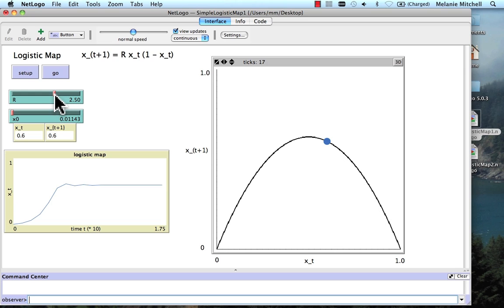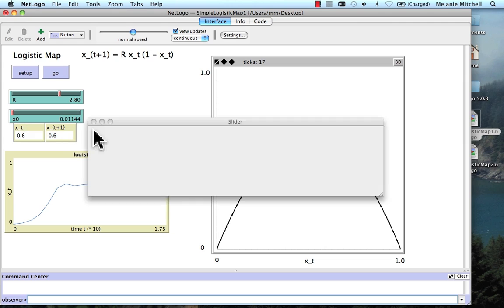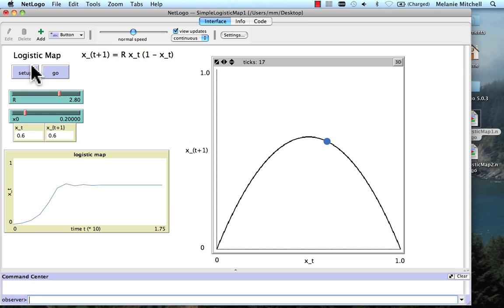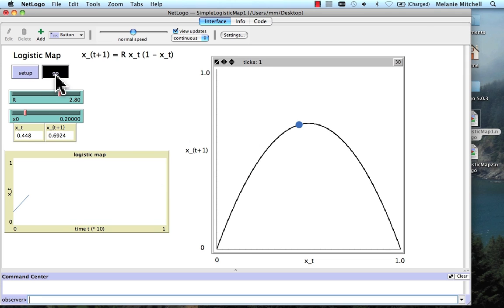Let's try this another time. Let's set this r to 2.8. I'll set x again to 0.2. Setup, the parabola is higher again, and let's see what happens.